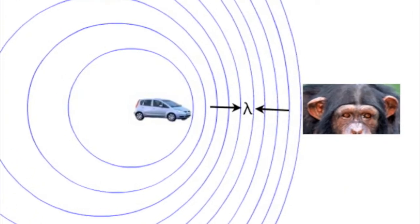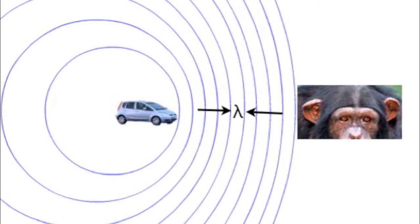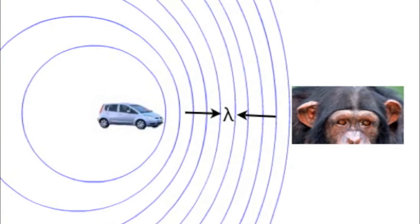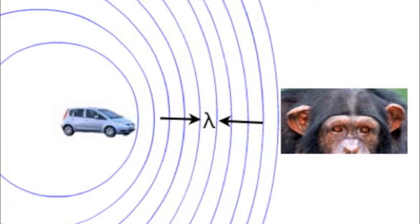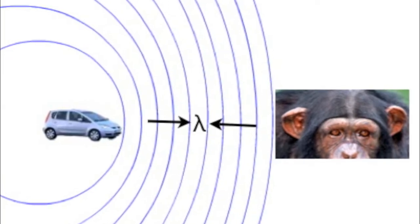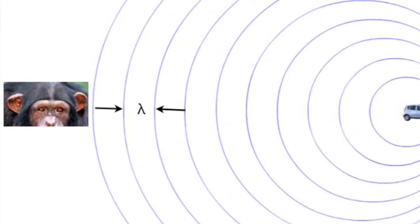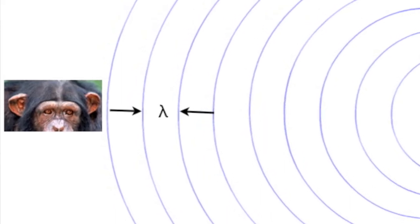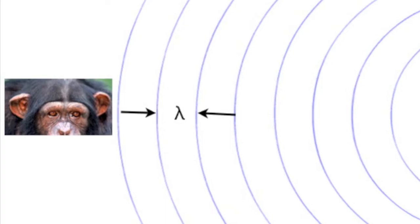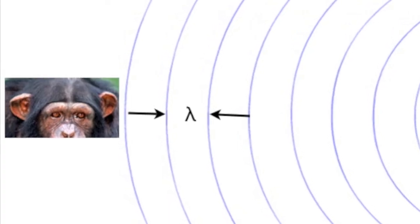So in front of the car, the wavelength is small. The frequency with which the waves reach the ears of the observer is high, which results in a higher pitched note. Behind the car, the wavelength is much larger. The frequency with which the waves reach the ears of the observer is less, and the sound seems much deeper.